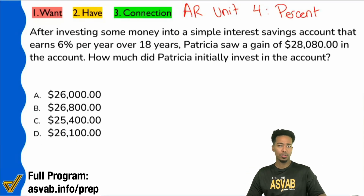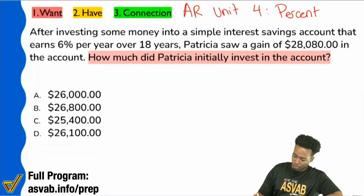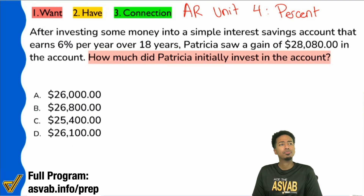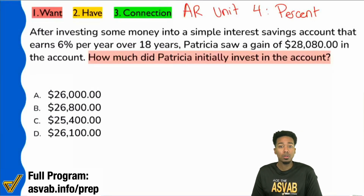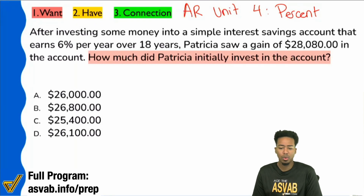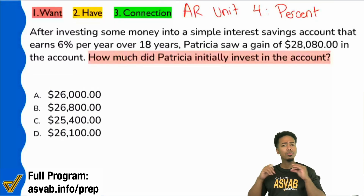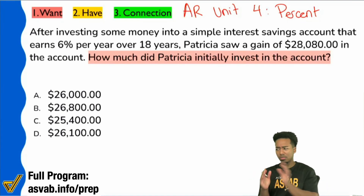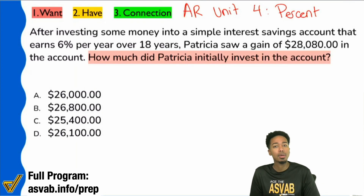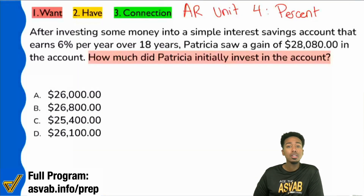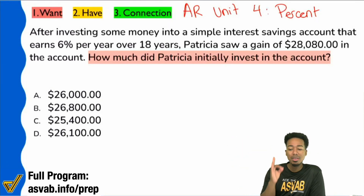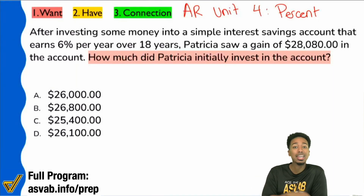Read the question first. What it says is: how much did Patricia initially invest in the account? When we read that, what's a word you associate with 'initially'? What was there in the beginning, what was there before all the action? Even if we don't know the exact math yet, if you read the question you can imagine what's going on - we want to know what that beginning investment was.